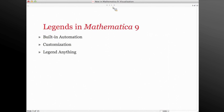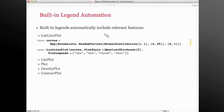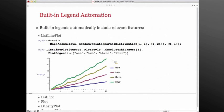The main things I want to focus on for the legends are the built-in automation added for them, their customizability, and the ability to use the legends in scenarios that aren't limited to just graphics — the ability to add them to pretty much anything. We'll start by looking at some of the automation. Here we're going to define a dataset for a bunch of curves, create a ListLinePlot out of that, make the curves nice and thick, and assign labels for each of our four curves. We can see that we have our legend on the right, and it has picked up the styles for each of our curves.